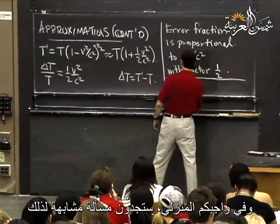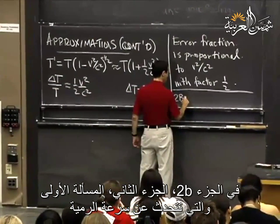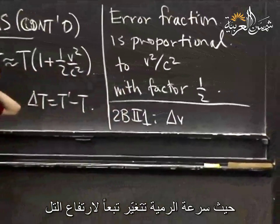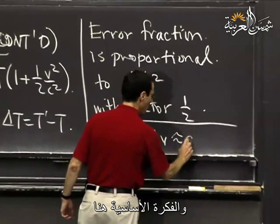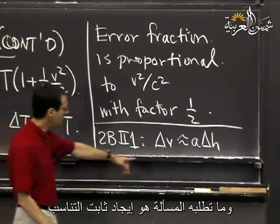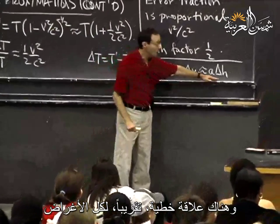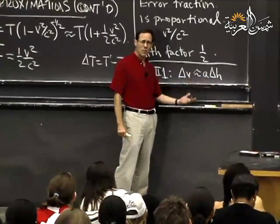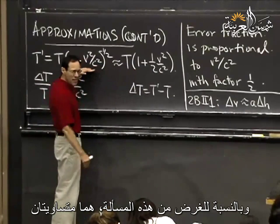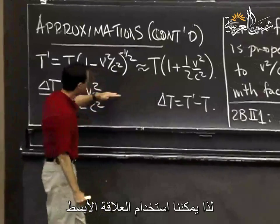On your homework, problem 2b part 1, there's the speed of a pitch changing depending on how high the mound is — approximately proportional to the change in height delta H. What you're trying to figure out is the constant of proportionality. There's a linear relationship, approximately — this is an equality because the lower-order terms are unimportant for the problem. The errors are negligible, so we might as well work with the simpler relationship.